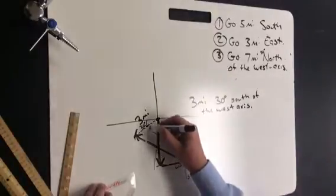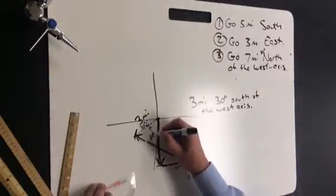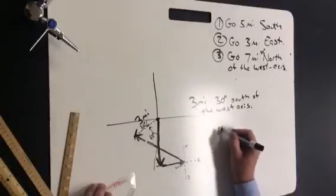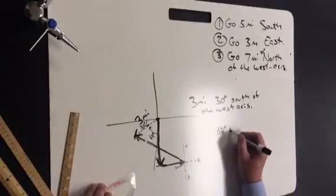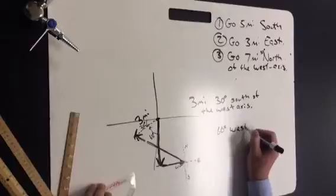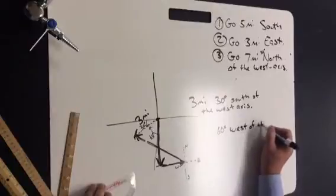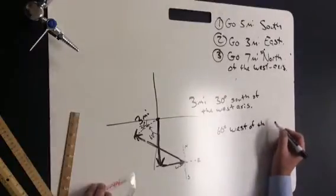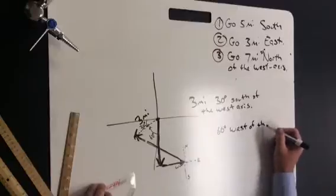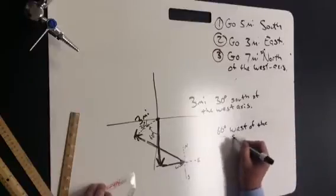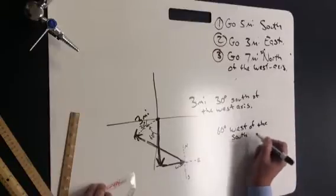Now you can measure it this way and say 60 degrees. So you can say 60 degrees west of the south axis.